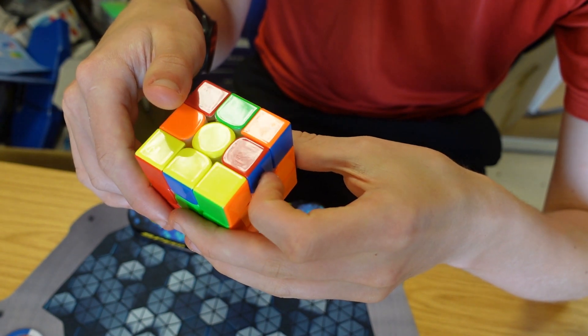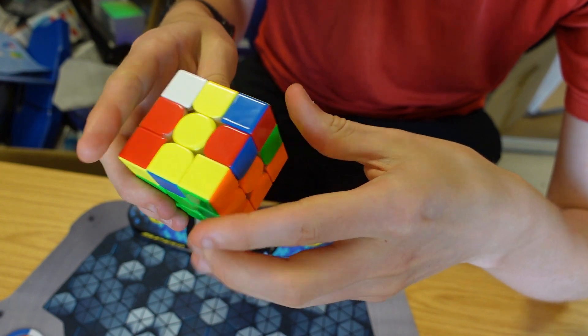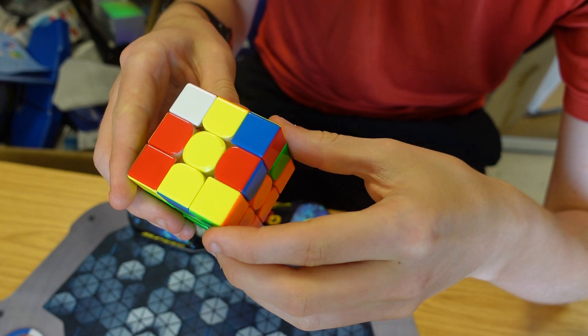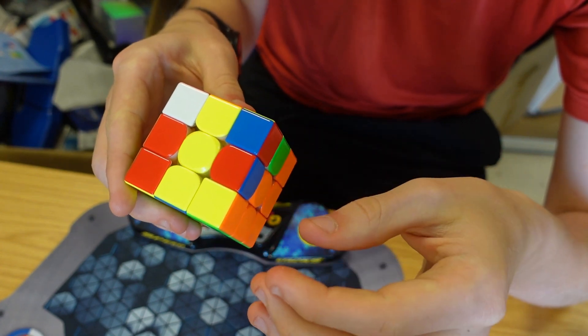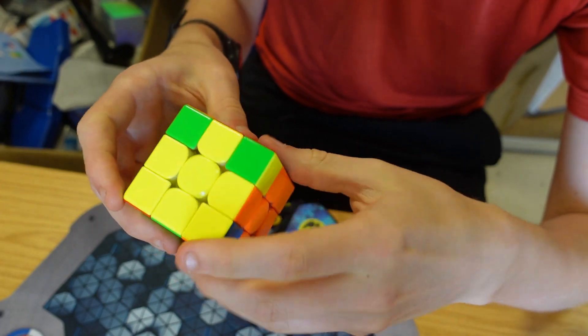He then does a U move and does something called a ZBLS. A ZBLS is essentially an algorithm that will force the cross to be solved so he can go straight into a ZBL case.